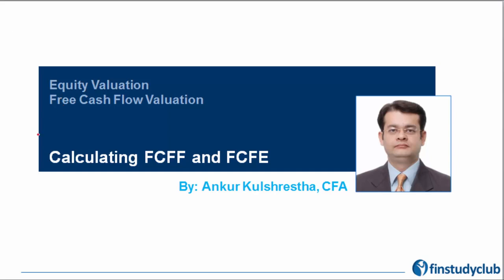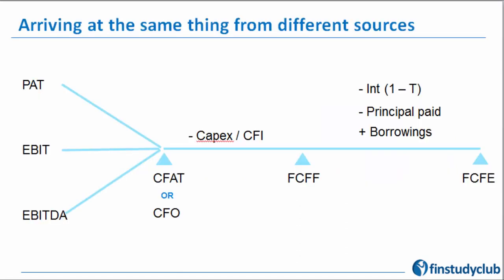Taking up from where we left in the previous session, in this one we are going to talk about how to actually calculate the free cash flows — both versions: free cash flow to the firm as well as to the equity. This is a part where maximum students find it very confusing, maybe because it involves intricate calculations or understanding of the FRA done in Level 1 as far as cash flow statements are concerned. This graphical representation will give you some peace of mind.